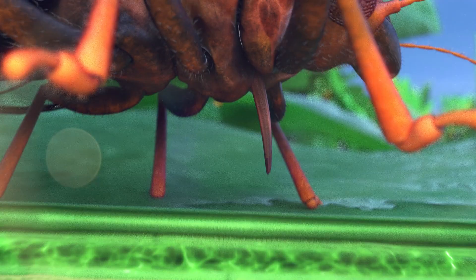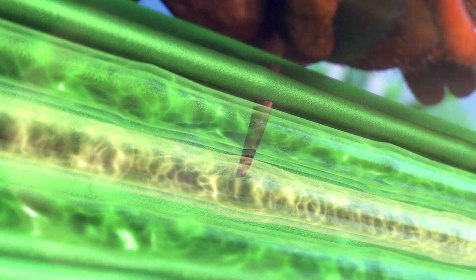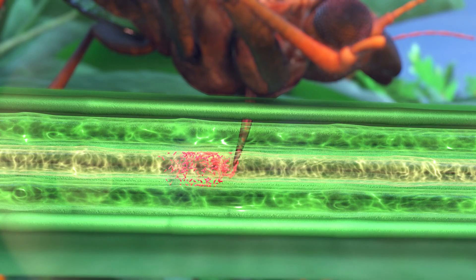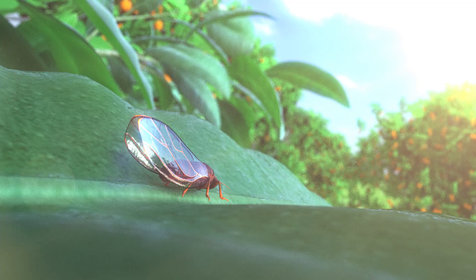The psyllid inserts its proboscis into the phloem of a healthy orange tree so that it can suck out the nutrients. If the psyllid is carrying the bacteria responsible for the tree disease, it transmits them into the tree's transport system while it is sucking.